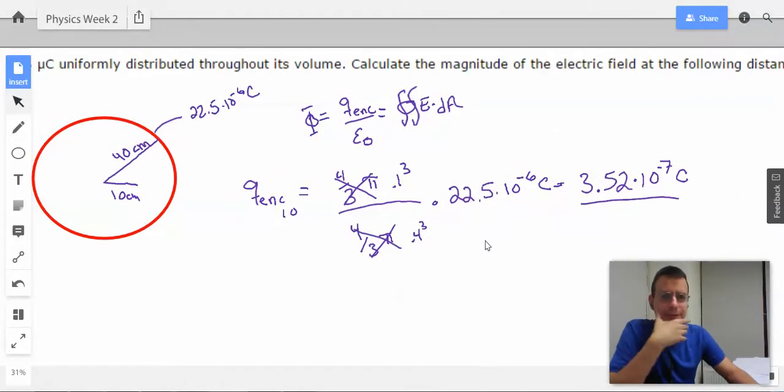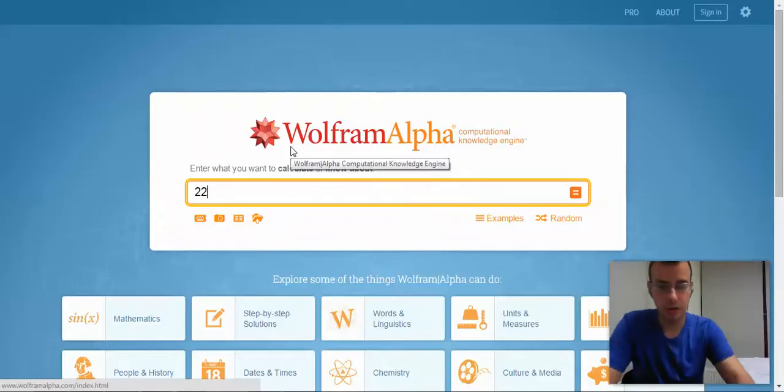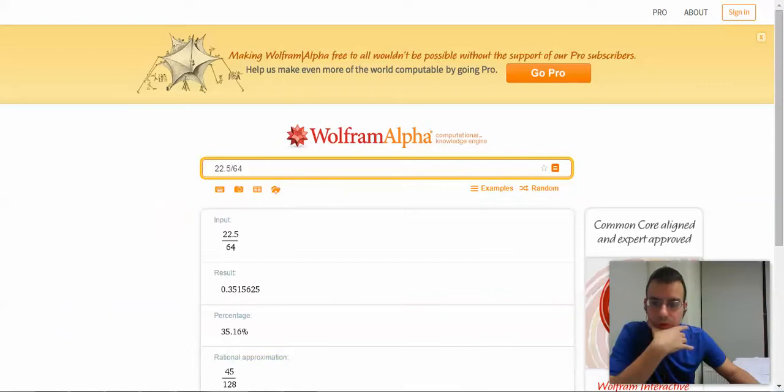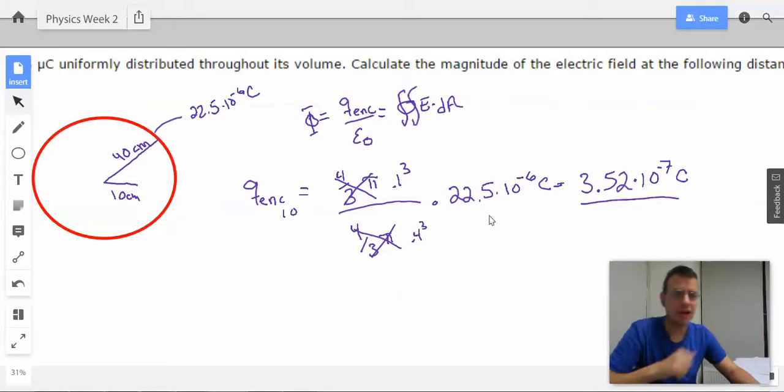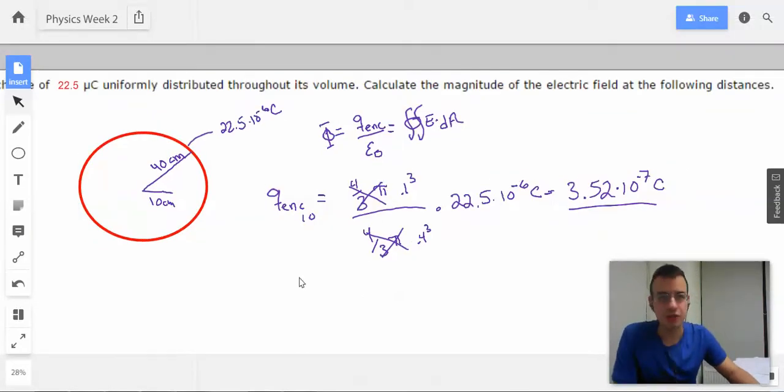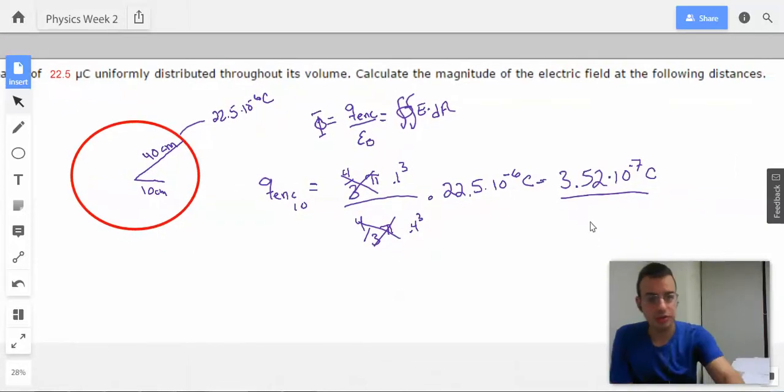Does that seem reasonable? Because we had 22.5 times 10 to the negative 7. Let's see here. That's like a hundredth of that almost. So 1 fourth cubed, 1 16th, 1 64th. So 22.5 divided by 64, .35. Yeah. Okay. I'll believe that. Mostly true.